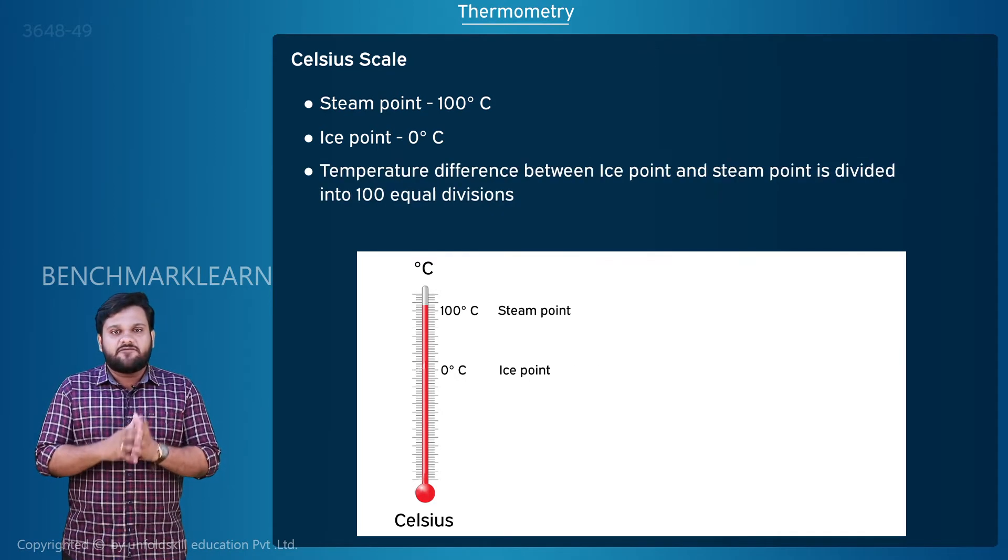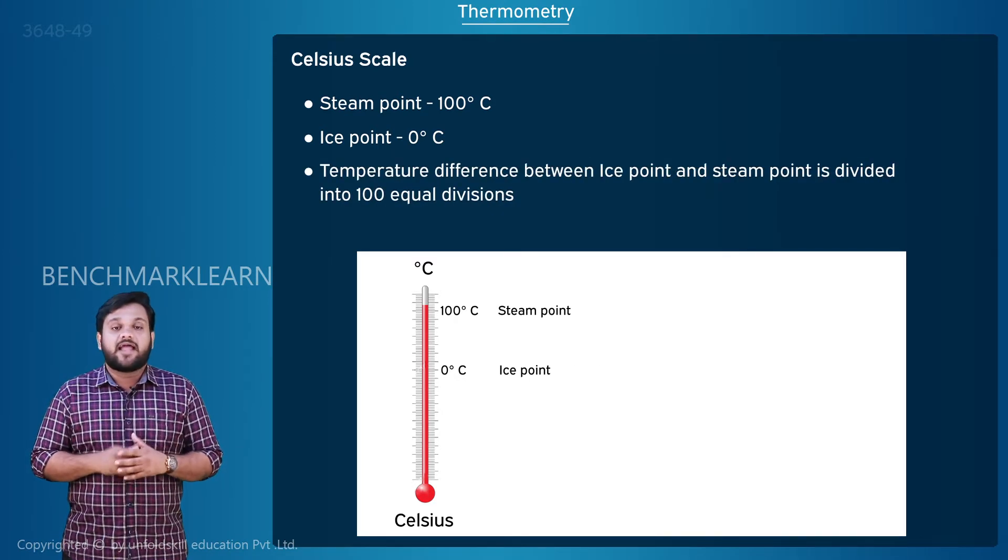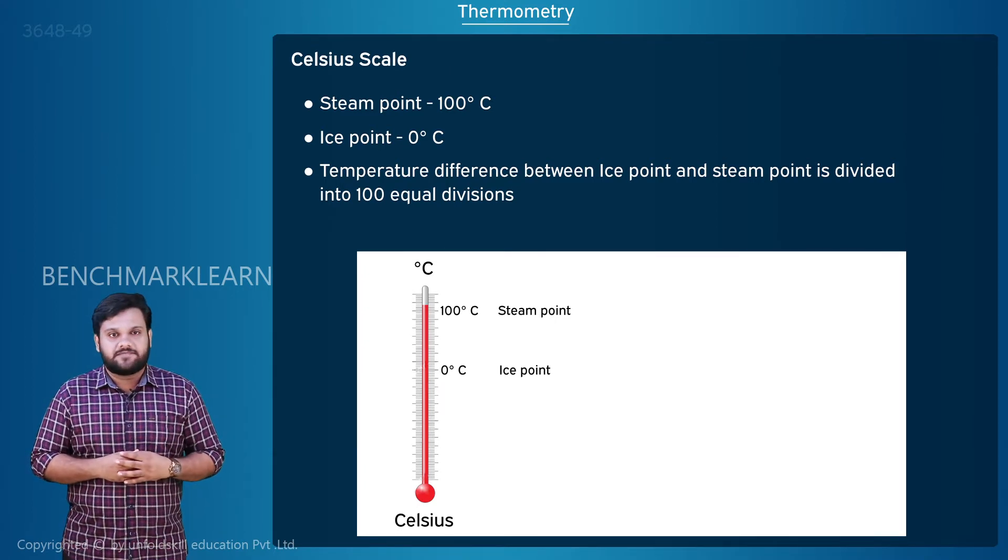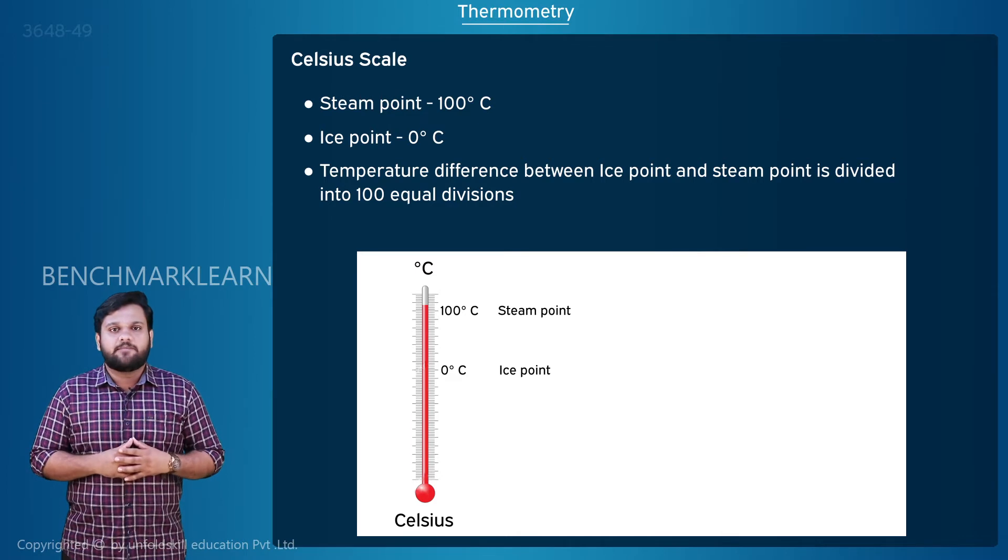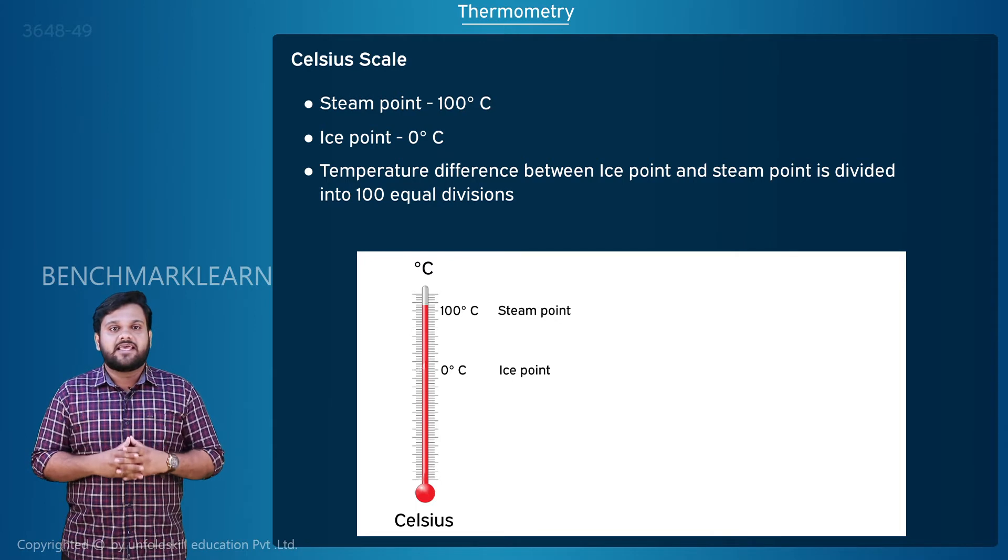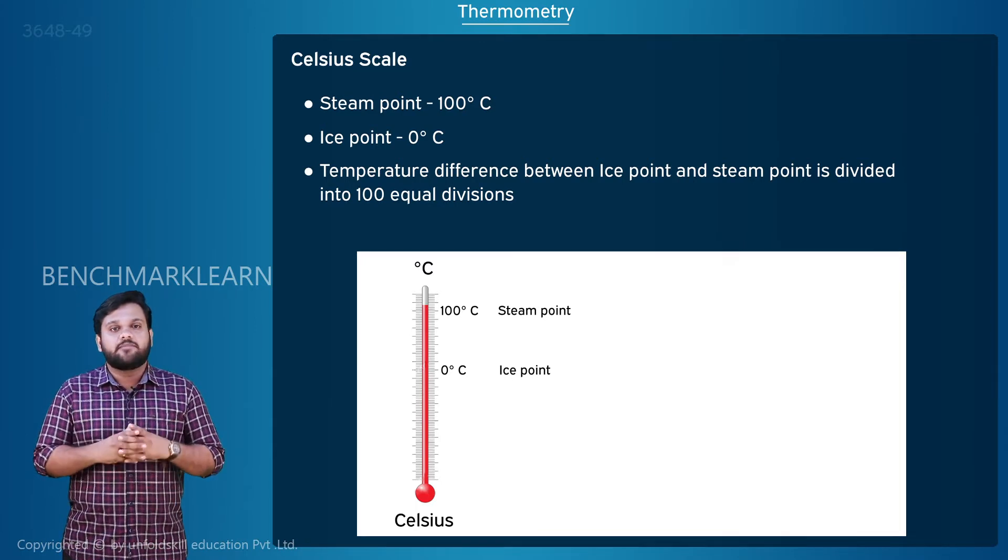The temperature difference between the ice point and the steam point is divided into 100 equal divisions. Any intermediate point can represent a particular temperature. The mercury reaching this reading is in thermal equilibrium with that temperature.